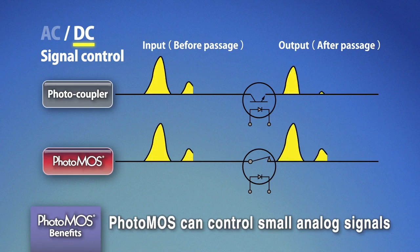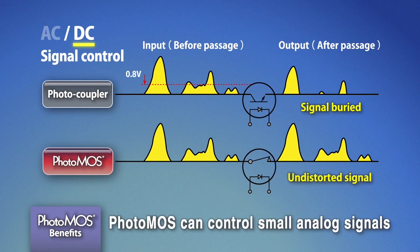The situation is similar for photocouplers controlling DC signals. With PhotoMOS, controlled by MOSFET, the notion of on-voltage is irrelevant.